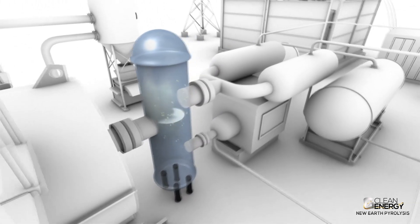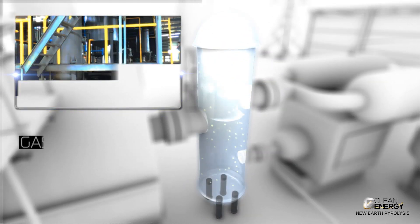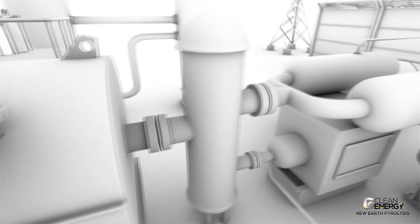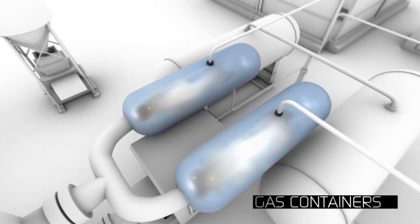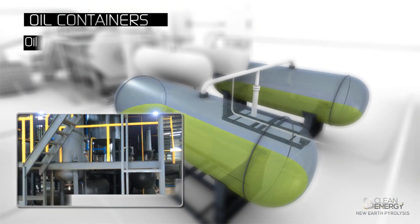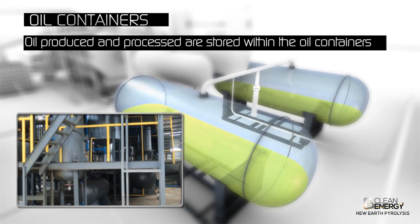Separation of key elements within the pyrolysis reactor allows for the condensers to initialize the cooling down process, resulting in the production of oil. This oil is stored within the collector oil tanks.